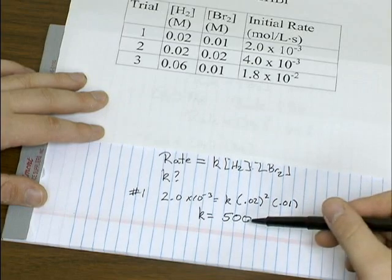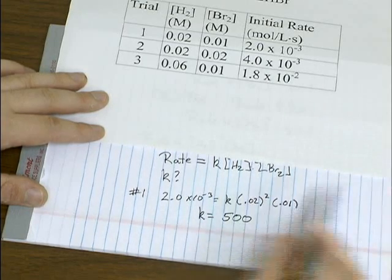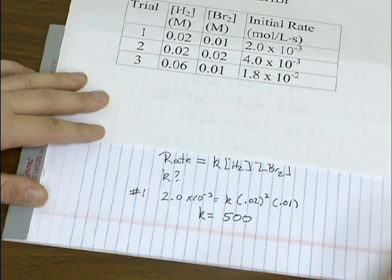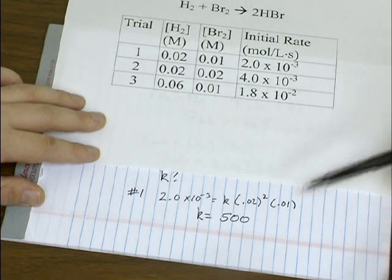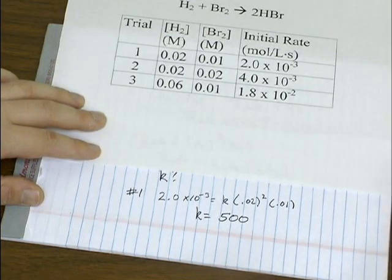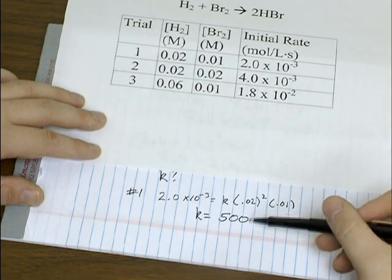Typically we ignore the units of the rate constant because they're going to vary depending on what the order of the reaction is. And if you wanted to check yourself, you can go back and repeat this for trials two and three, and you should get the same answer.